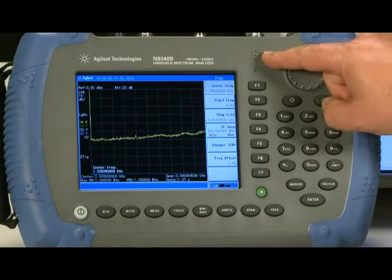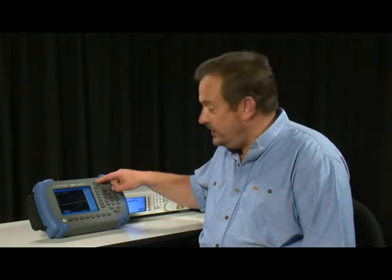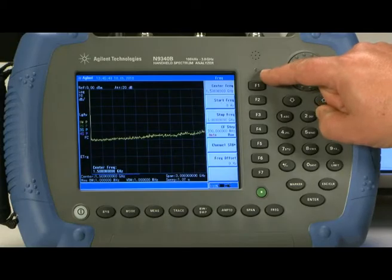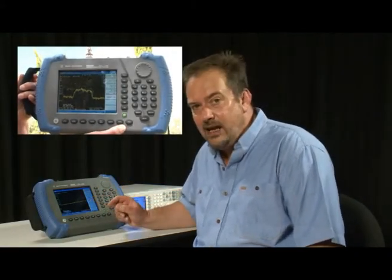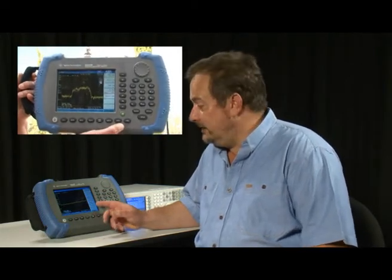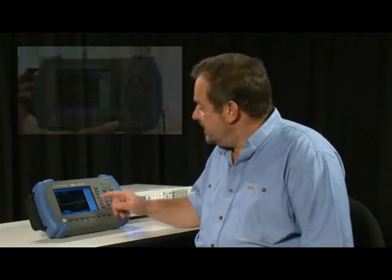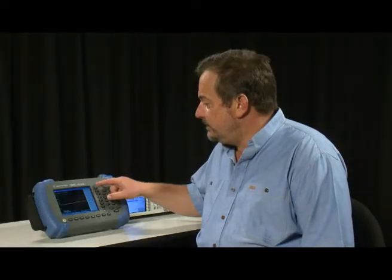On top here you can see there is a built-in loudspeaker for listening to demodulated audio. Below that is a light sensor. The N9340B has an incredibly bright daylight viewable display that if using indoors or in dark conditions could actually be too bright. So with the automatic light sensor activated the instrument will automatically adjust the screen brightness depending on ambient light conditions.